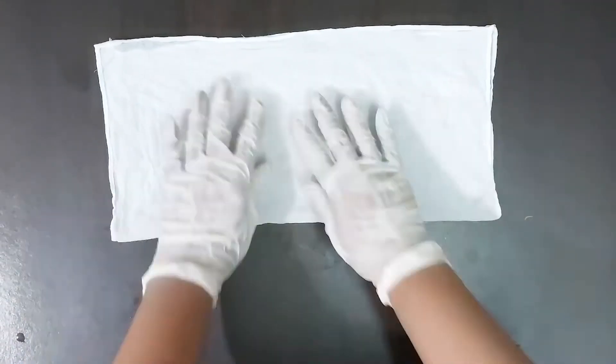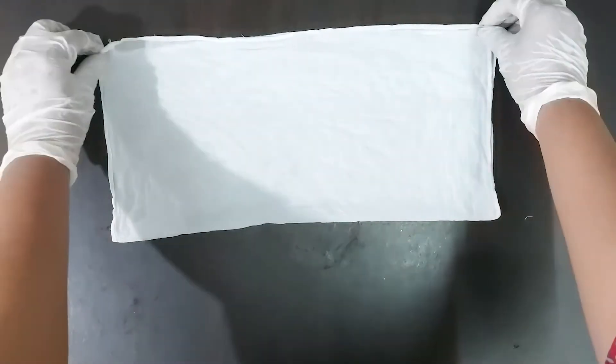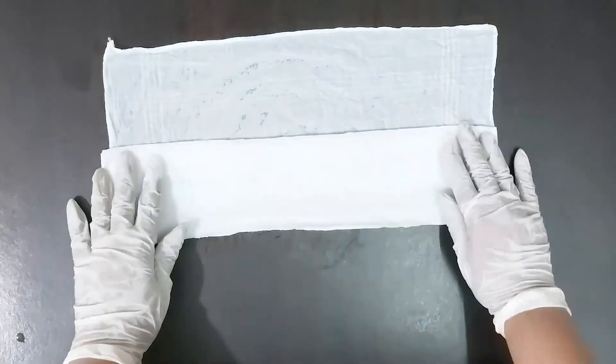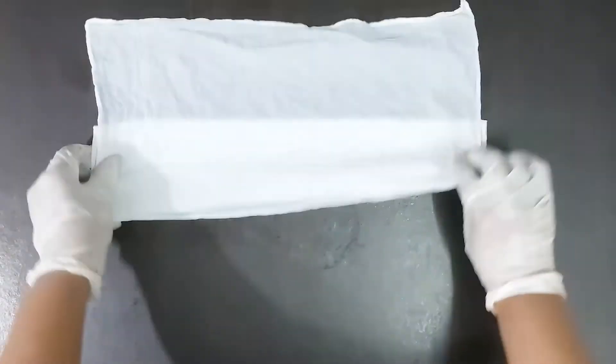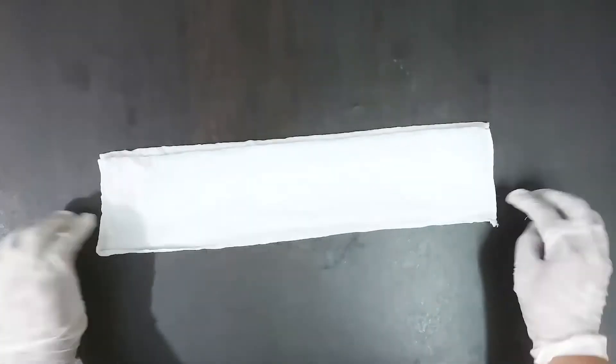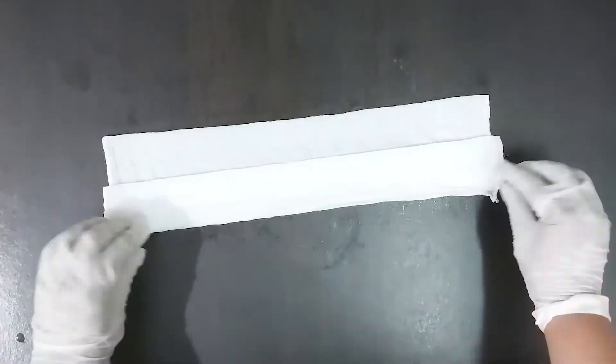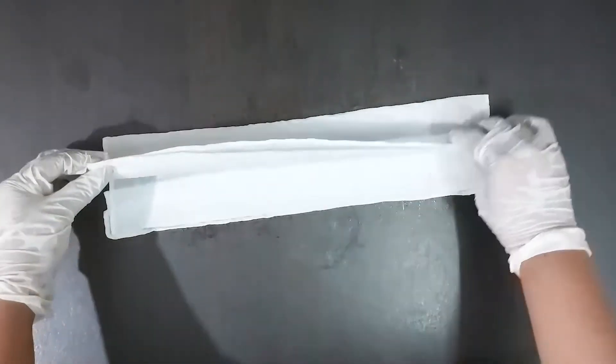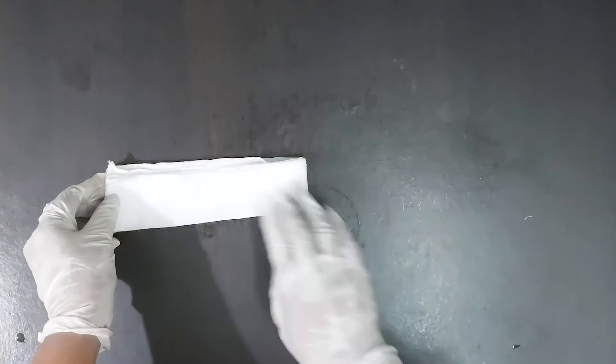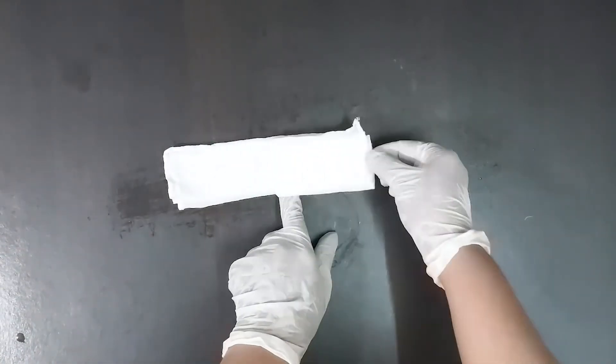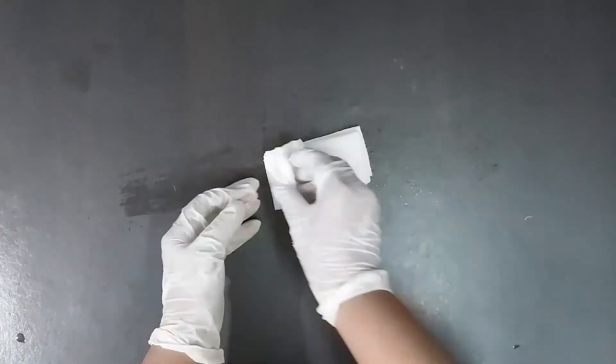We are going to fold the fabric making an accordion fold. Press the folds. With this folding technique we will get equal folds. Now fold it in half. Keep folding till you get a square shape.